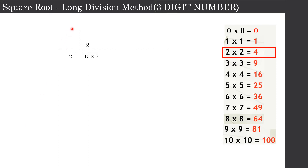Now let us see how to find the square root of a three-digit number by long division method. Let us take the number 625. The first step is to pair the numbers by putting a bar over them. I am pairing 25 and putting a bar over it, and 6 is left out so I put one bar over 6 as well. This is the first step.